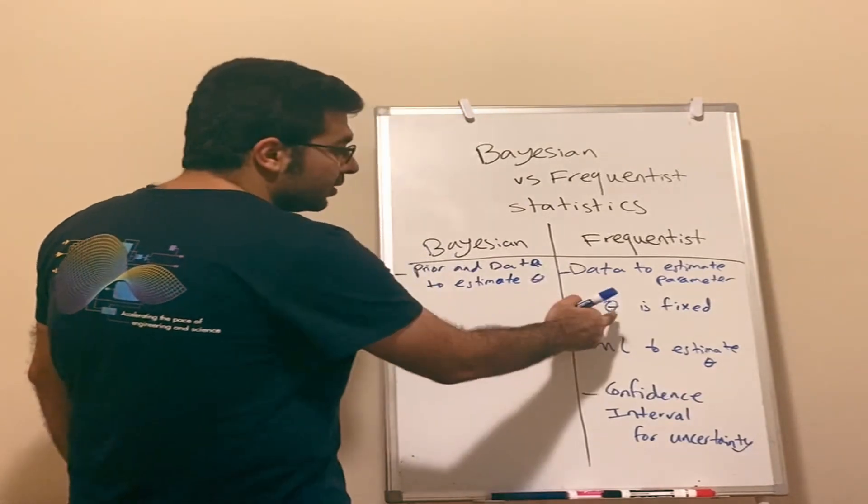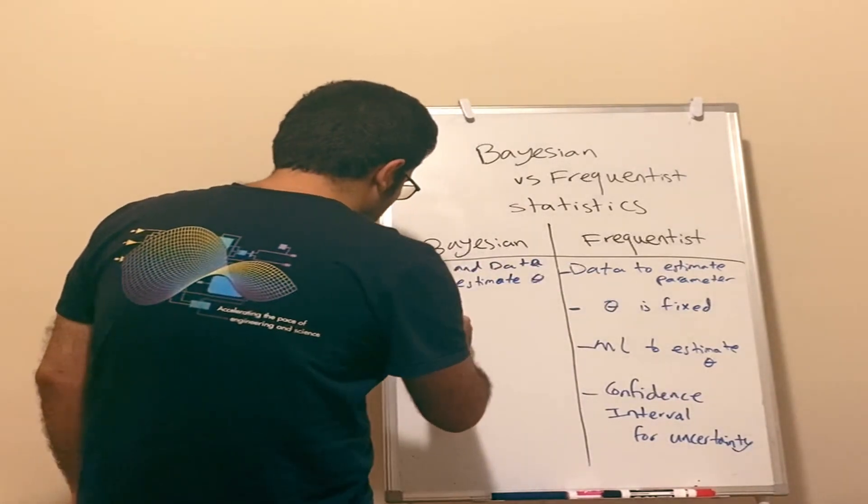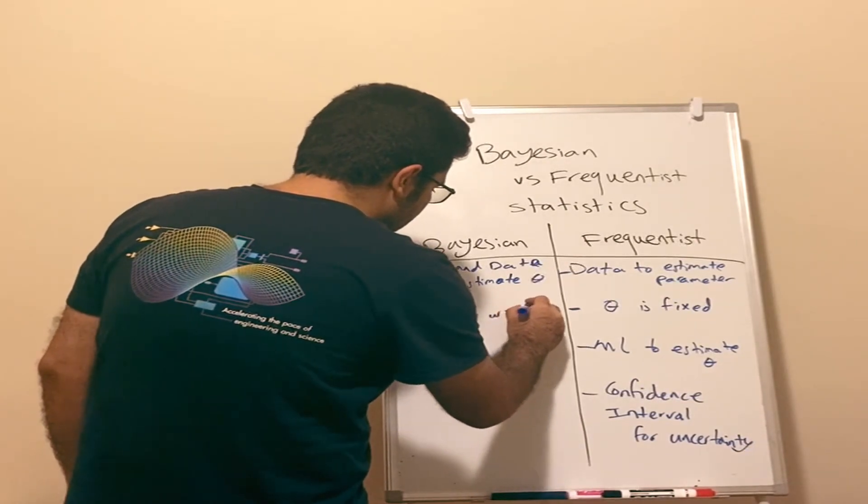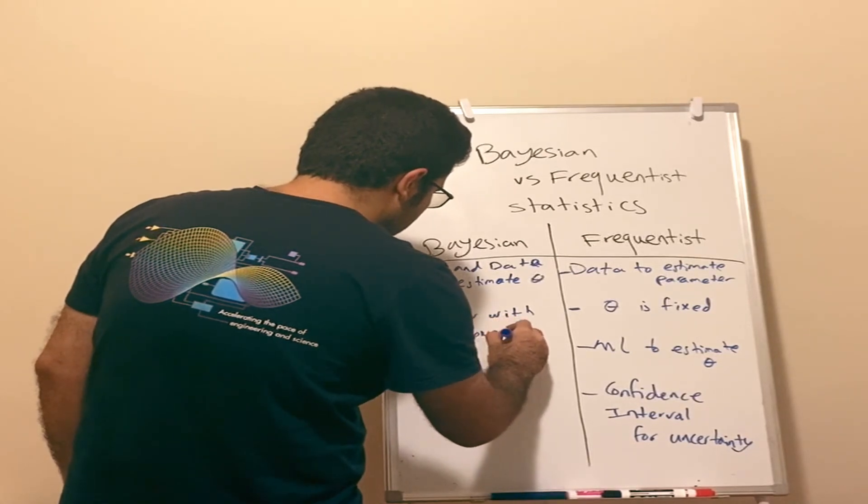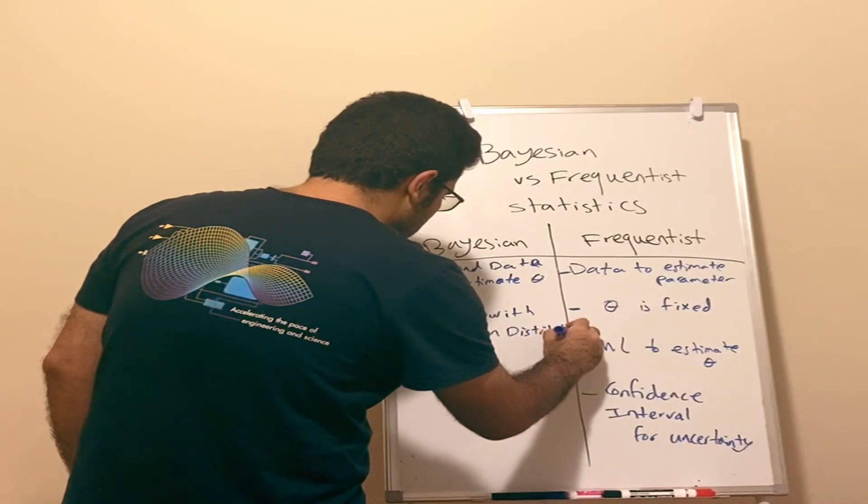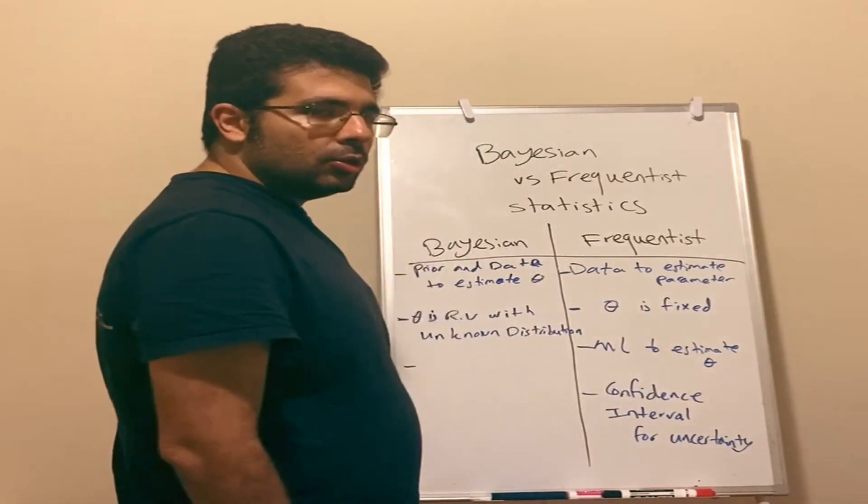We consider theta to be a random variable with unknown distribution. They use maximum posterior probability to estimate theta.